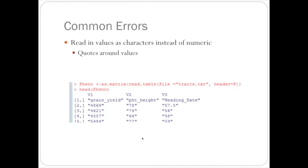So another common error is to read in the values as characters instead of numeric. In R, this happened because the header was equal to false, so grain yield and plant height and heading date was read in as characters, since they're letters instead of numbers. And this is easy to see because there's quotes around the values.